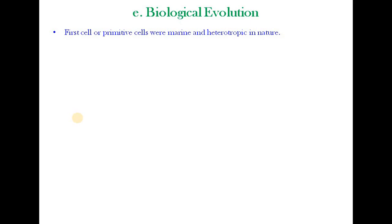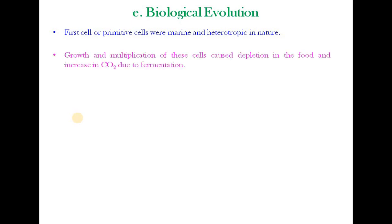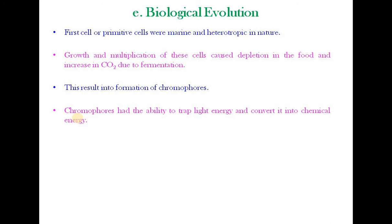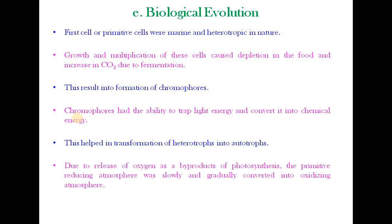The first or primitive cells were marine and heterotrophic in nature. Growth and multiplication of these cells caused depletion of food and increase in carbon dioxide due to fermentation, resulting in formation of chromophores. Chromophores had the ability to trap light energy and convert it into chemical energy, helping in the transformation of heterotrophs into autotrophs. Due to release of oxygen as a by-product of photosynthesis, the primitive reducing atmosphere was slowly and gradually converted into an oxidizing atmosphere.